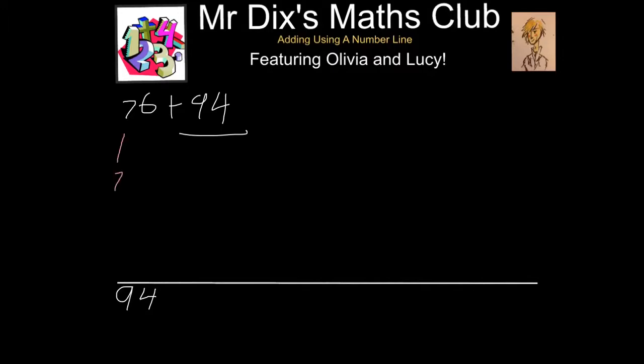The 7 represents 70 and the 6 represents a 6. Then add 10 from your tens which gives you 104. Now you have added 10 so you need to add 66 more.